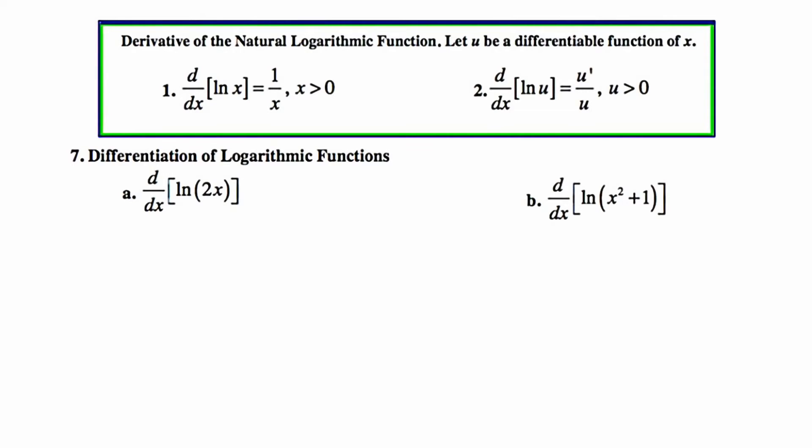The first thing to realize is that the expression we're taking the natural log of, we're going to refer to as the argument. When you're taking the derivative of a natural logarithmic expression, the argument is going to go into the denominator, and its derivative is going to go in the numerator.